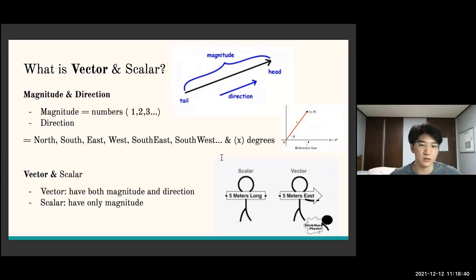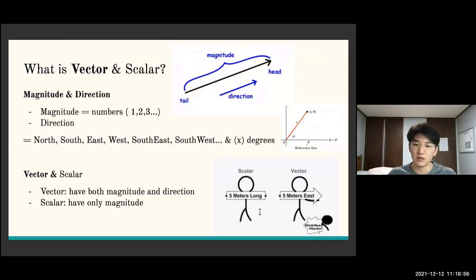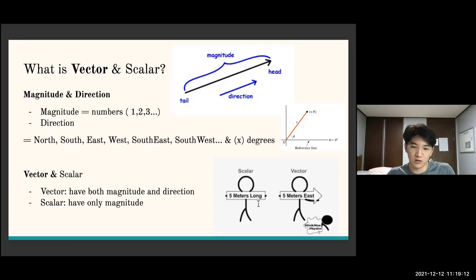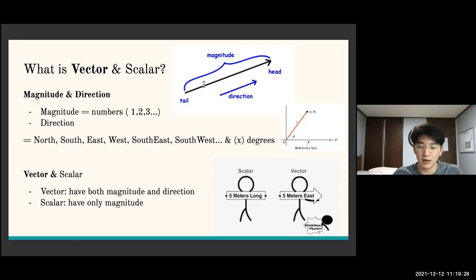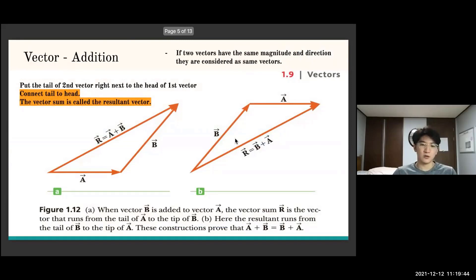So what is a vector and what is a scalar? The basic difference is that a vector has both magnitude and direction, but a scalar has only magnitude. For example, a vector would be five meters east — magnitude plus direction — while a scalar would be just five meters. For vectors, the starting point is called the tail and the arrow end is called the head.